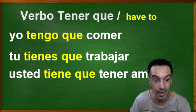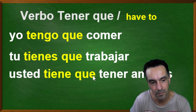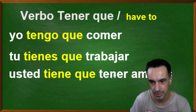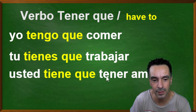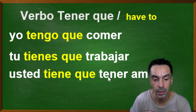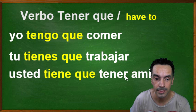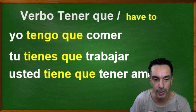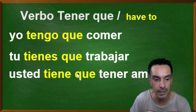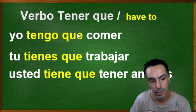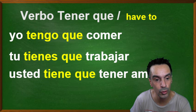Usted tiene que tener amigos. Notice here I'm using tener twice — one is 'have to' and the other is the verb in infinitive, tener — you have to have friends. I can also say yo tengo que tener amigos — I have to have friends. That's a good way to show you how you can use 'have to.'